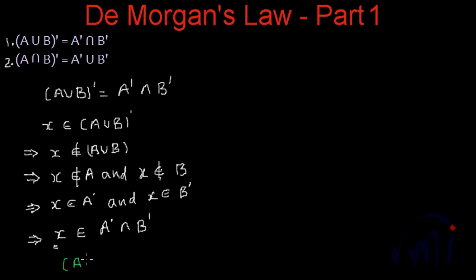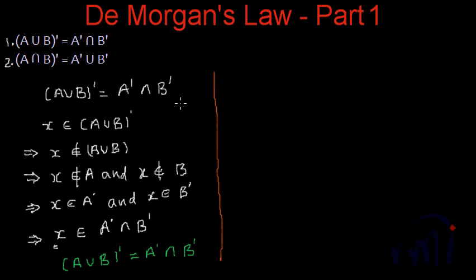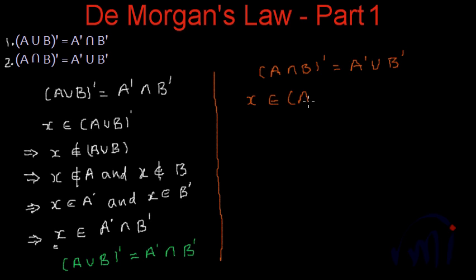That means A union B complement is equal to A complement intersection B complement. Now let's prove the second part or the second law. The second law says A intersection B whole complement is equal to A complement union B complement. Again we will assume X as one of the elements of A intersection B complement.